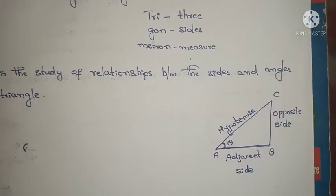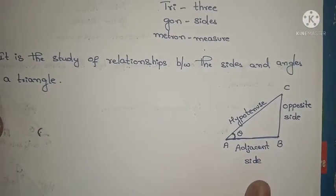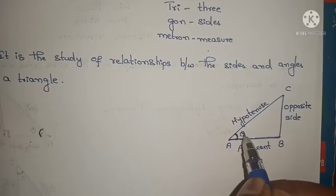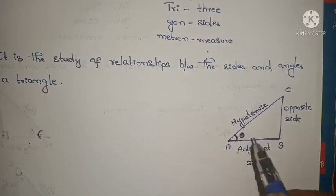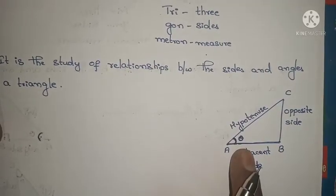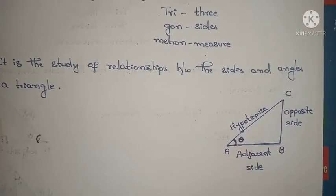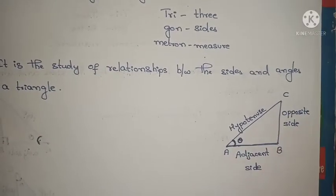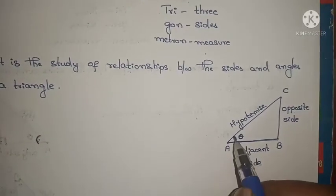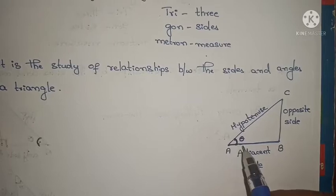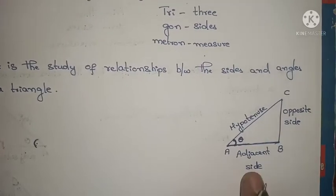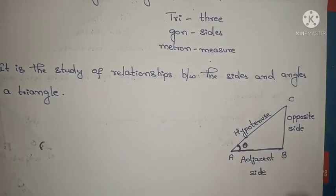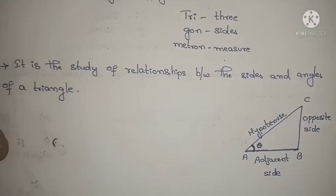If we consider any right angled triangle, if this is the angle theta, the side opposite to it is called the opposite side. Here the angle is touching this side, so this side is called the adjacent side. And the longest side is called the hypotenuse.